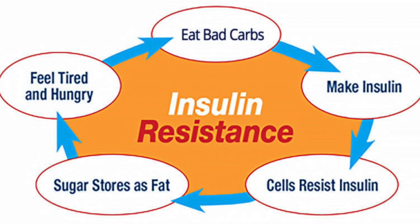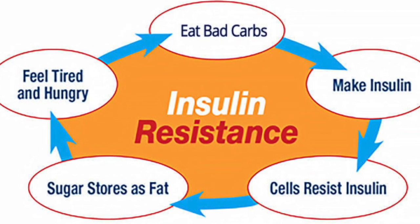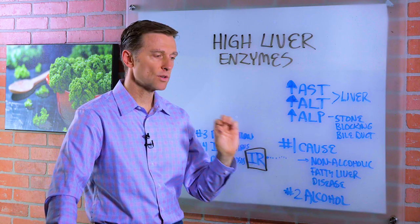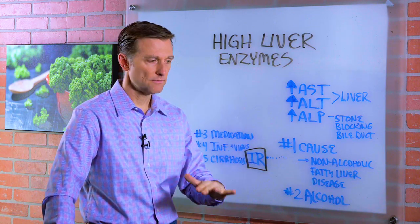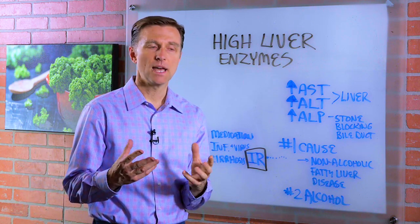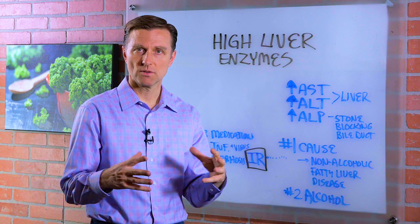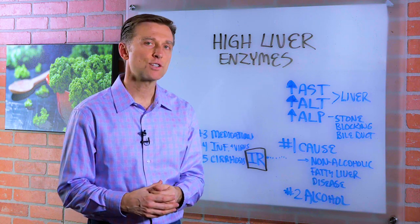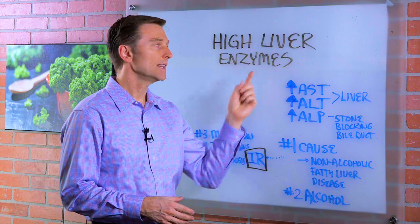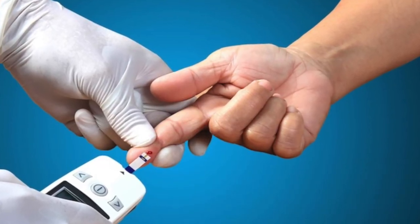Insulin resistance increases insulin, and then that will convert to fat in the liver — that's where your body's going to dump it first. So the fat fills up, it gets inflamed, it spills over around the organs causing visceral fat, it creates scar tissue, you lose the function, you have the high liver enzymes, and then you develop diabetes. So that's the progression.